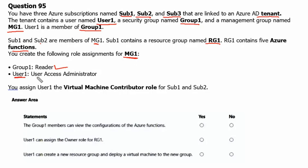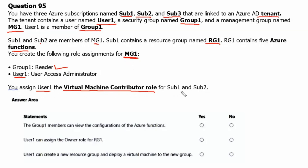You create the following role assignments for Management Group1: Group1 has the Reader role on Management Group1, and User1 has the User Access Administrator role on Management Group1. You also assign User1 the Virtual Machine Contributor role for Subscription1 and Subscription2.